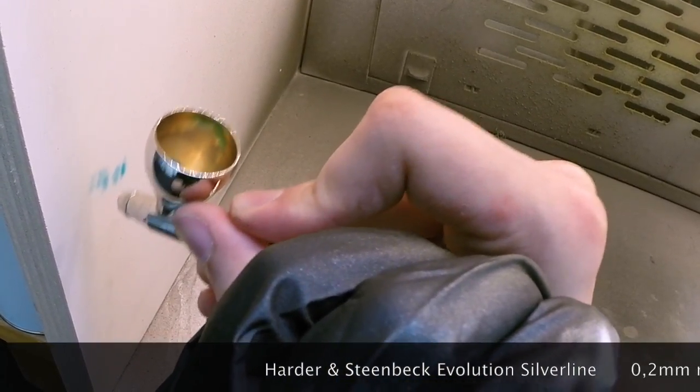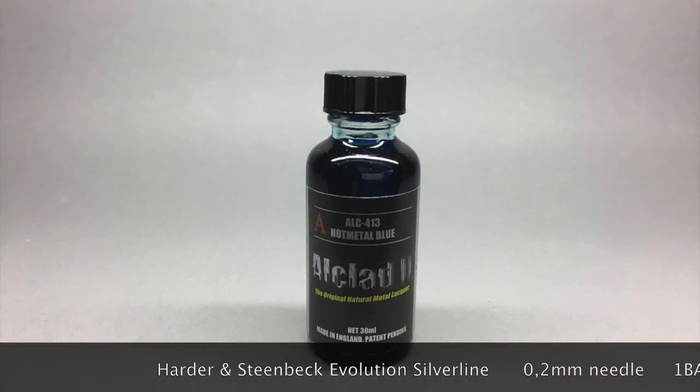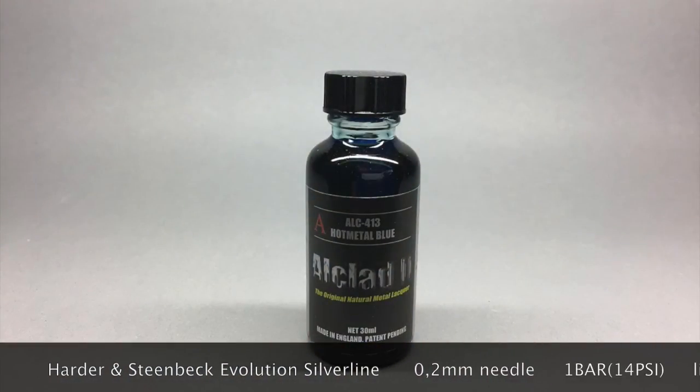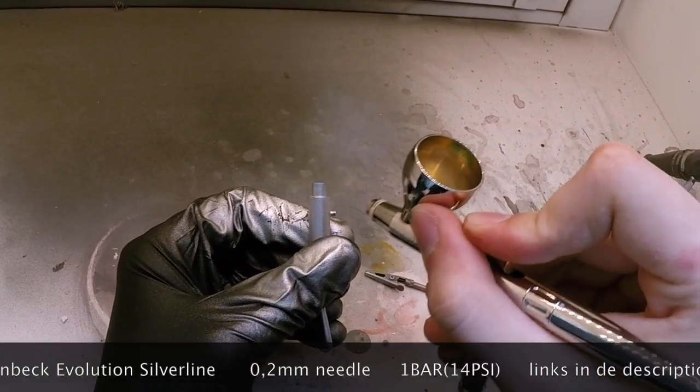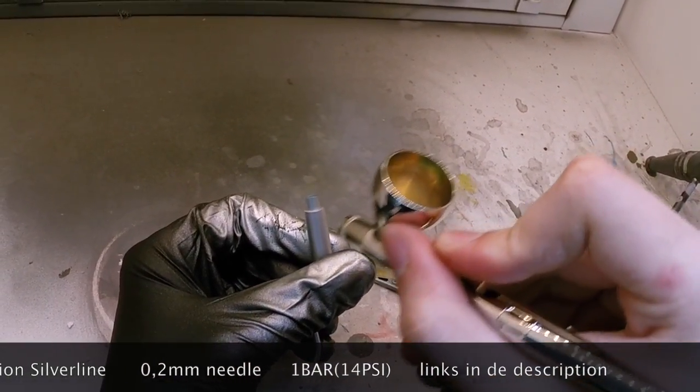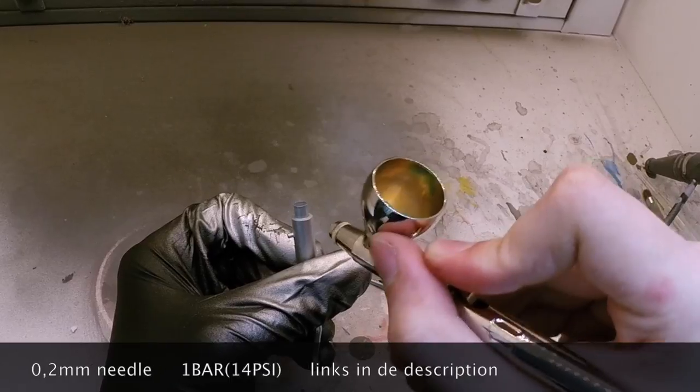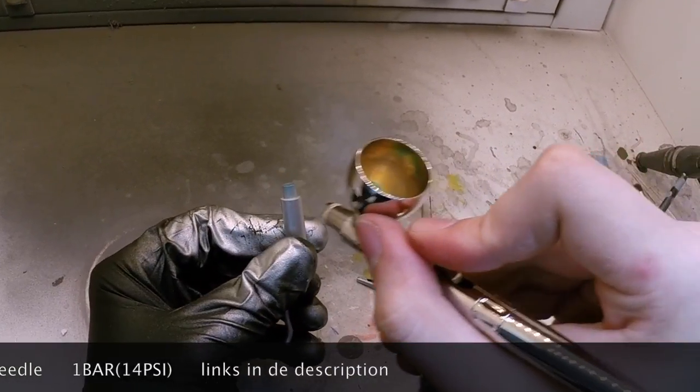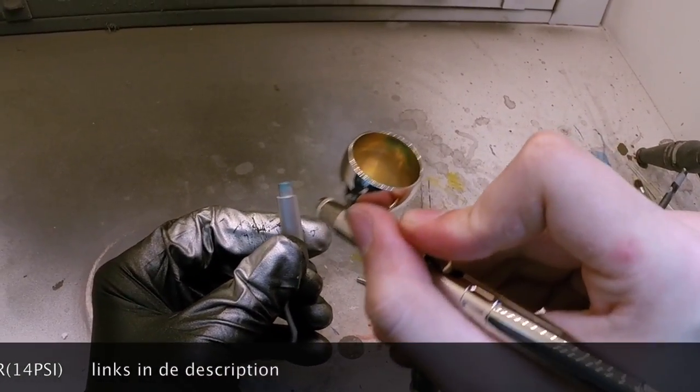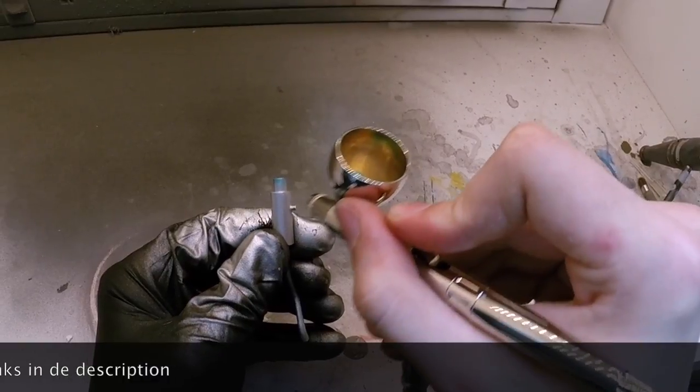Just to sum it up quickly, I applied some primer, then I painted it silver, and then I adjusted my airbrush to set it to a certain depth as I have a needle depth stop on this airbrush, preventing the needle from going too far back and making it exactly predictable on how much paint comes out.